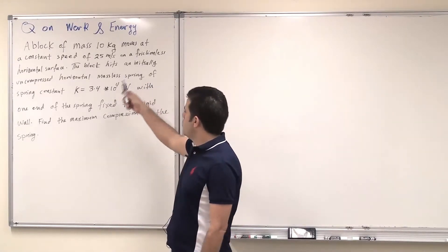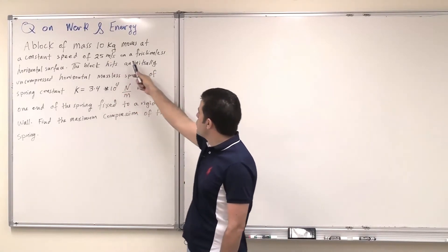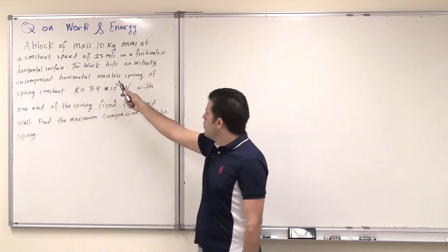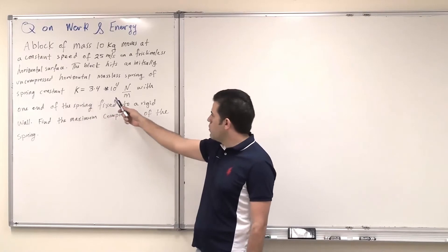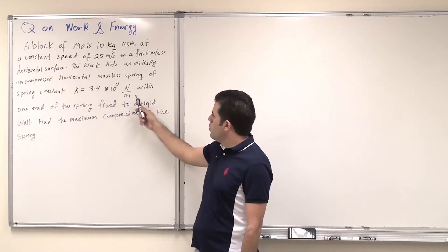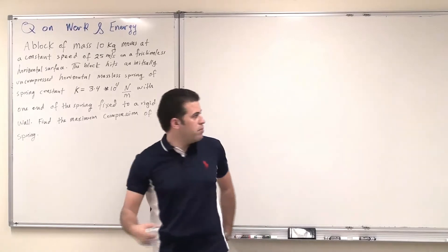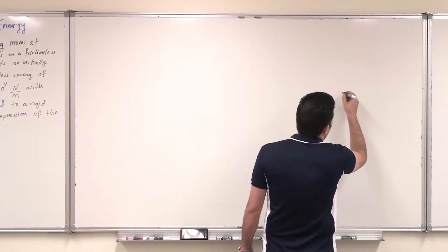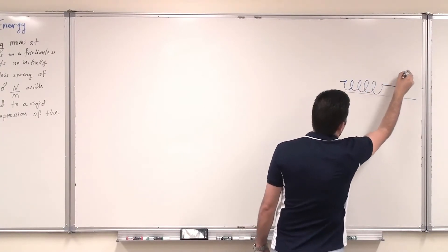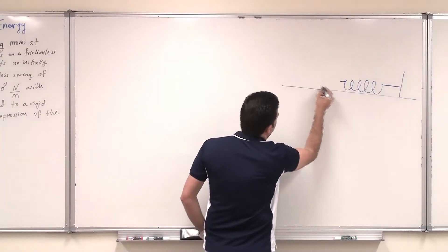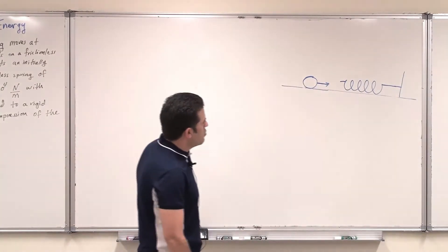Assalamu alaikum. This question is on work and energy. A block of mass 10 kilograms moves at a constant speed of 25 meters per second on a frictionless horizontal surface. The block hits an initially uncompressed horizontal massless spring of spring constant k equal to 3.4×10⁴ newtons per meter, with one end fixed to a rigid wall. Find the maximum compression of the spring. We can draw the surface, the spring uncompressed and attached to the wall, with the mass heading toward the spring to compress it.